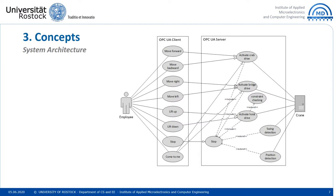The OPC UA client is the controller used by the employee. It has eight main functionalities, including moving forward, backward, left, right, lifting up and down, an emergency stop function for safety-rated emergency cases, and the come-to-me function based on an indoor positioning system. The OPC UA server is an embedded system that activates or deactivates actuators of the crane based on commands from the client and data from crane sensors. The stop function is activated upon receiving a stop command from the client or an alarm from the swing or position sensor.